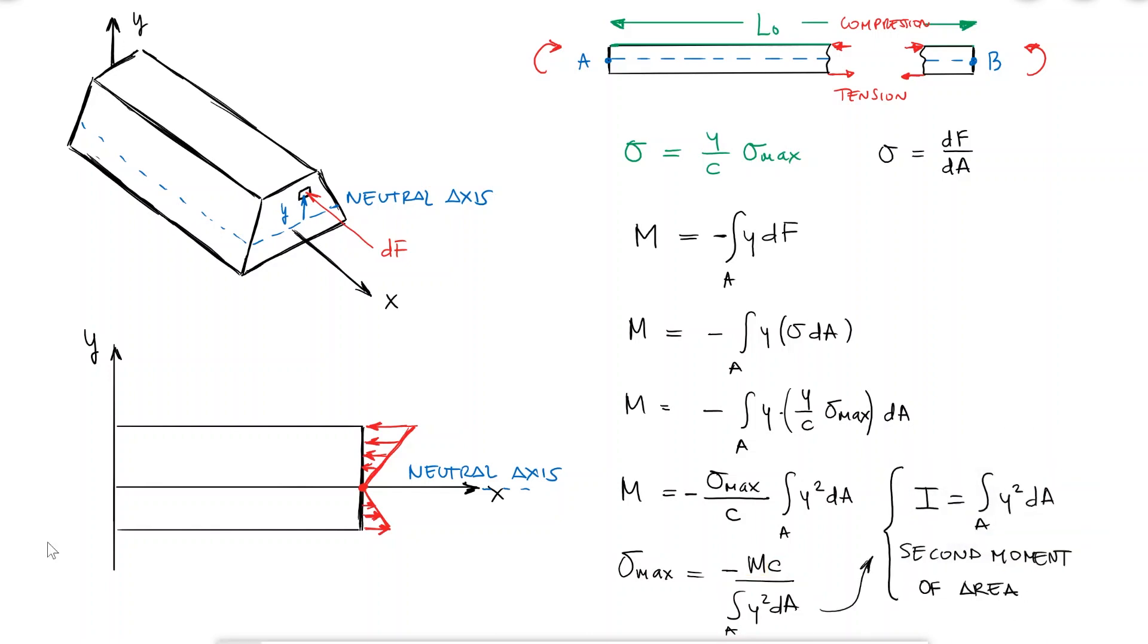The second moment of area is similar to what we covered in the previous video, link below. Except this time we're using Cartesian coordinates instead of polar coordinates. Many of the cross-section areas of beams, even the more complex ones, can result from putting rectangles together, so let's find the second moment of area of a simple rectangle with base b and height h as an example.